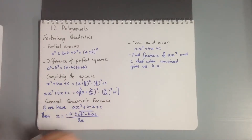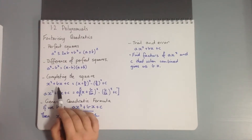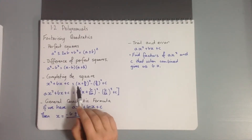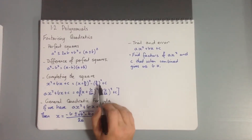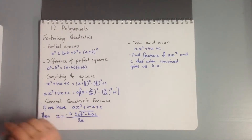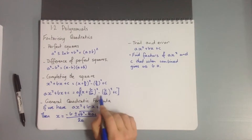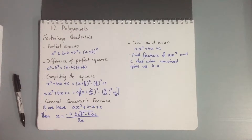We also have the method of completing the square, which is probably a little better demonstrated with an example. For ax² + bx + c, that factorizes to (x + b/2)² - (b/2)² + c. Or if we have ax² + bx + c, then that becomes a[(x - b/(2a))² - (b/(2a))² + c/a].